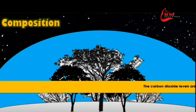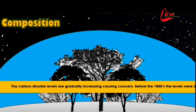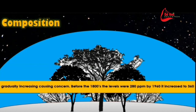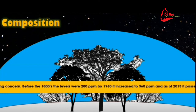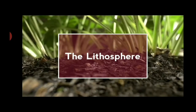Carbon dioxide levels are gradually increasing, causing concern amongst many scientists. Before the 1800s, levels were 280 parts per million. By 1960, it had increased to 360 parts per million, and as of 2013 it passed the long-feared 400 parts per million — a long-feared critical threshold.